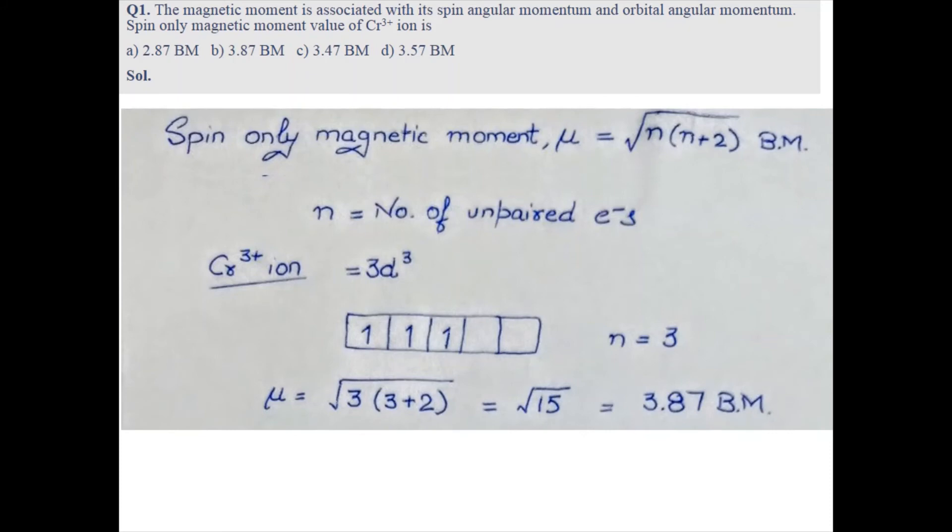formula, so we get μ equals under root 3 times (3 plus 2), and the value comes out to be 3.87 Bohr magneton. So option B is correct.